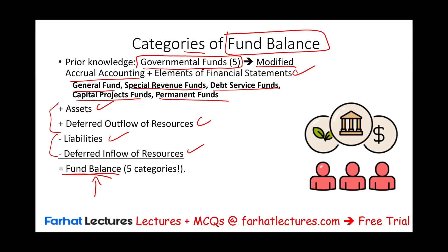Now, under the fund balance, you're going to see we have five different categories of fund balance. But if you really think about it for a moment — what's the fund balance? It's the difference between assets and liabilities, which is called net assets, but we're not going to call it net asset, we're not going to call it equity, we're not going to call it net position. Let's just call it fund balance — the equity of the government fund, the excess of assets over liabilities. In this session, we'll focus on these various categories, explaining what each category is.